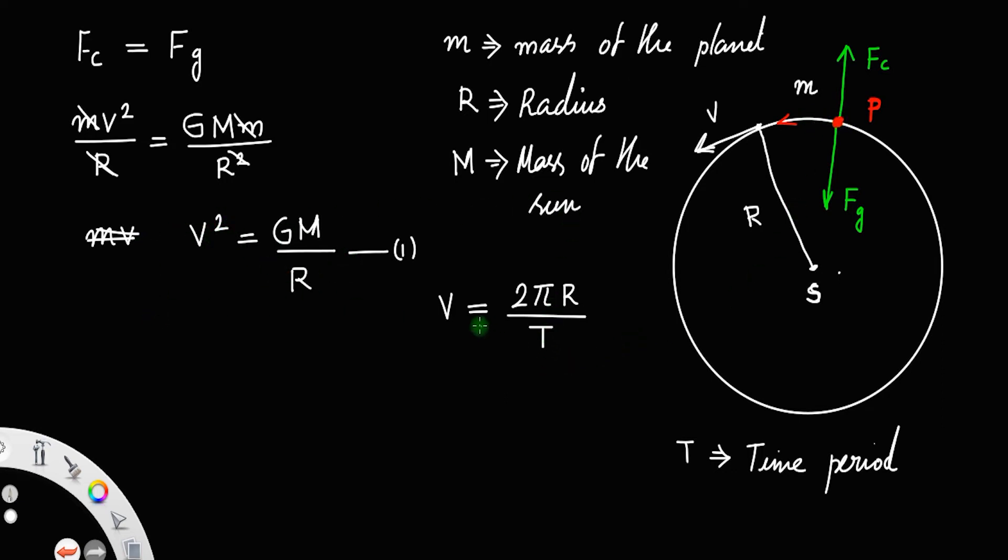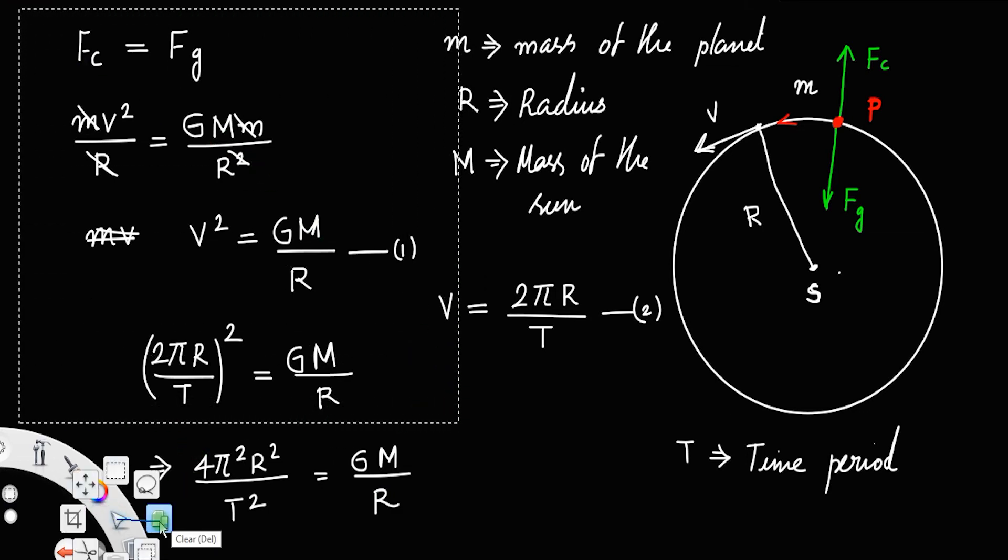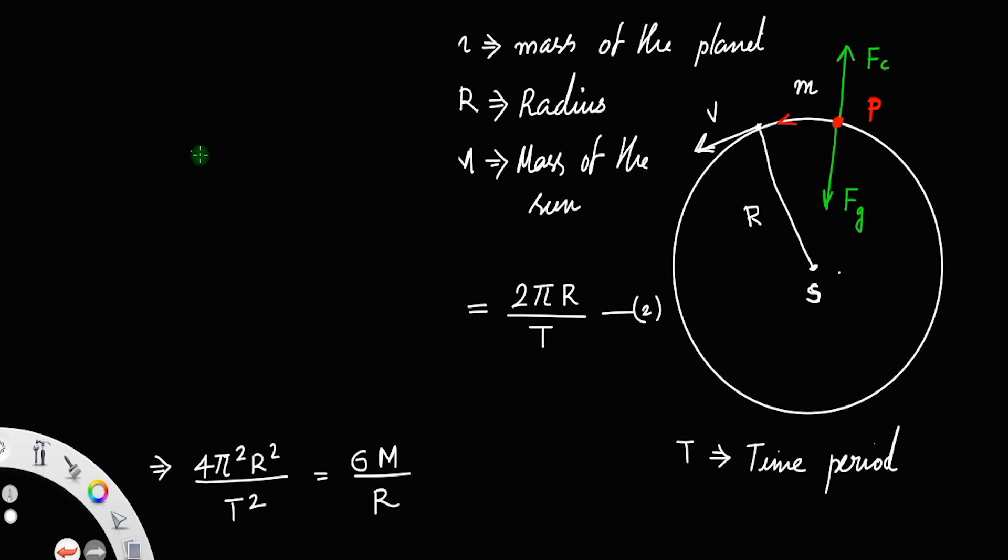So here you can substitute the value of velocity in the first equation. That is, 2πr divided by T, whole squared, equals GM divided by r. This equals 4π² r² divided by T² equals GM divided by r. You can rearrange this equation, so T² equals...